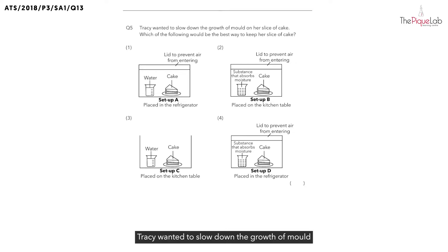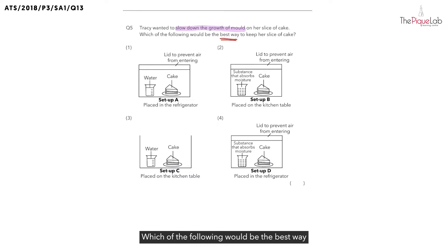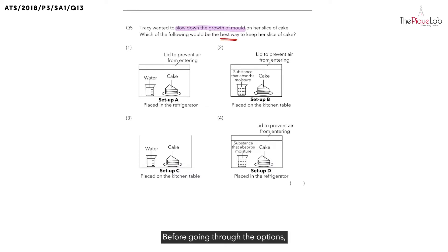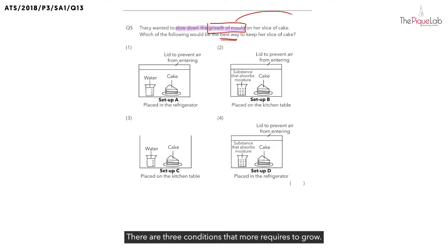Question 5. Tracy wanted to slow down the growth of mold on her slice of cake. Which of the following would be the best way to keep her slice of cake? Before going to the options, I would like you to recall first. What do you think allows mold to grow? There are 3 conditions that mold requires to grow. Can you remember what are these 3 conditions?